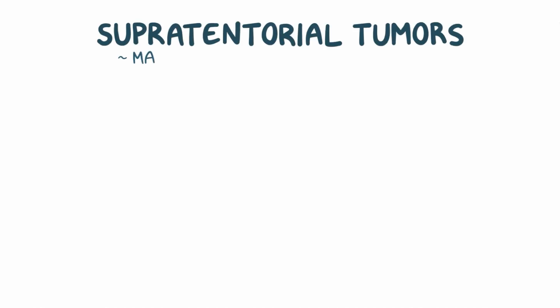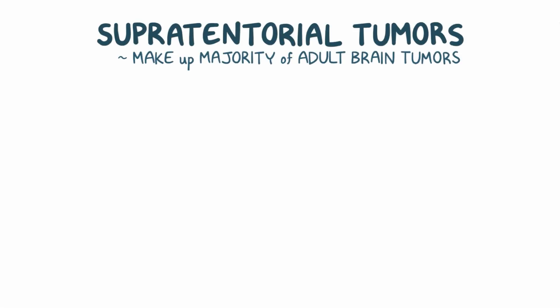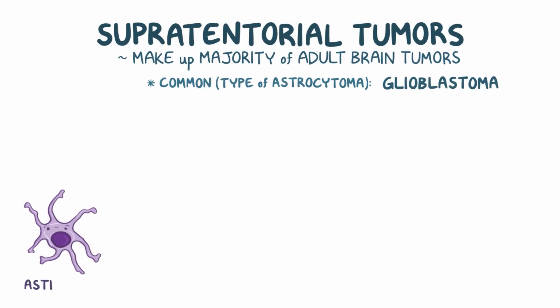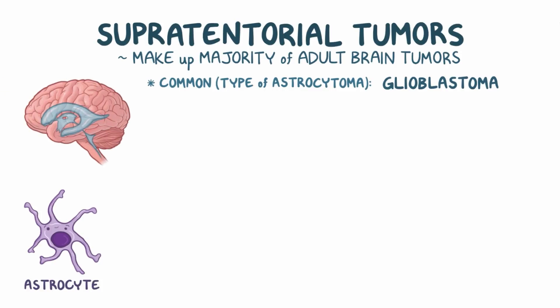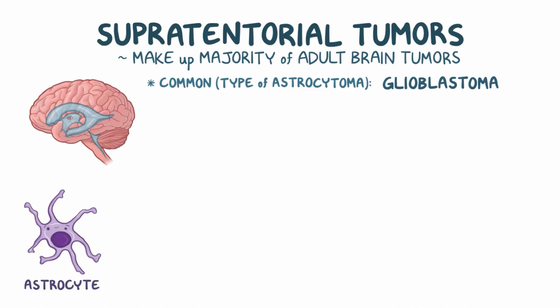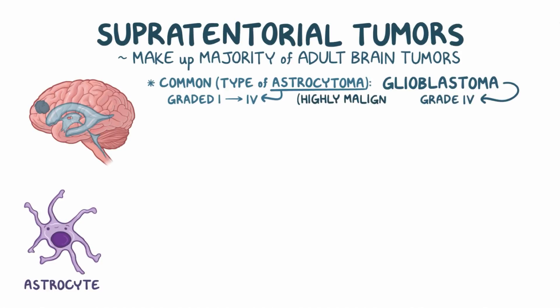Supratentorial tumors make up the majority of adult brain tumors. A common one is a type of astrocytoma called a glioblastoma. Because astrocytes are found throughout the brain and the spinal cord, astrocytomas can form in all of these locations. But glioblastomas are mostly found in the cerebral hemispheres.